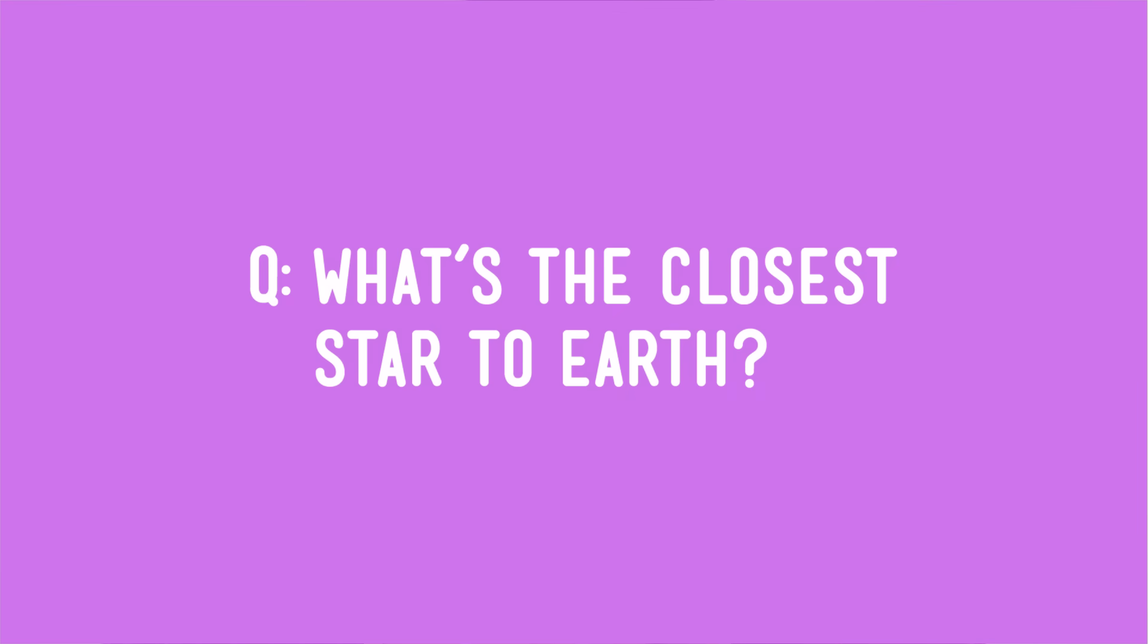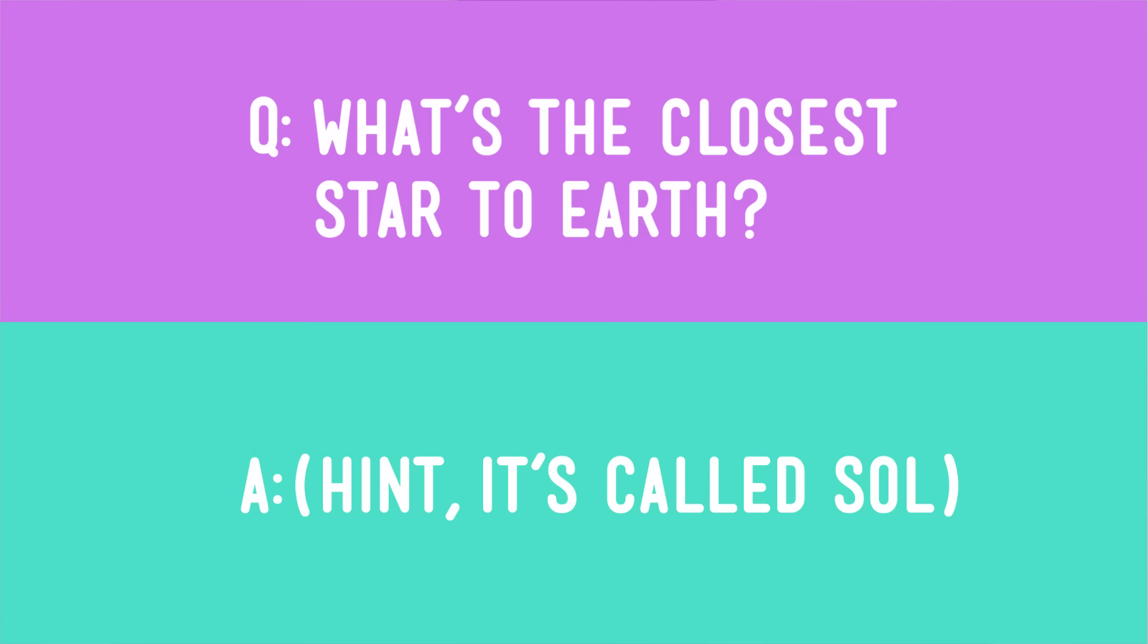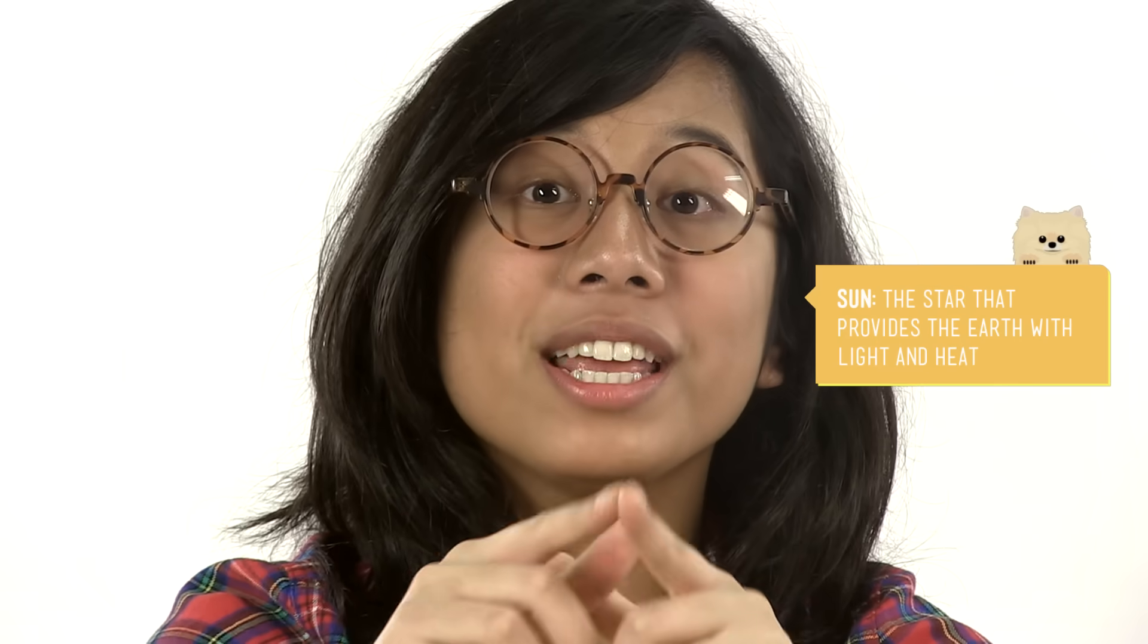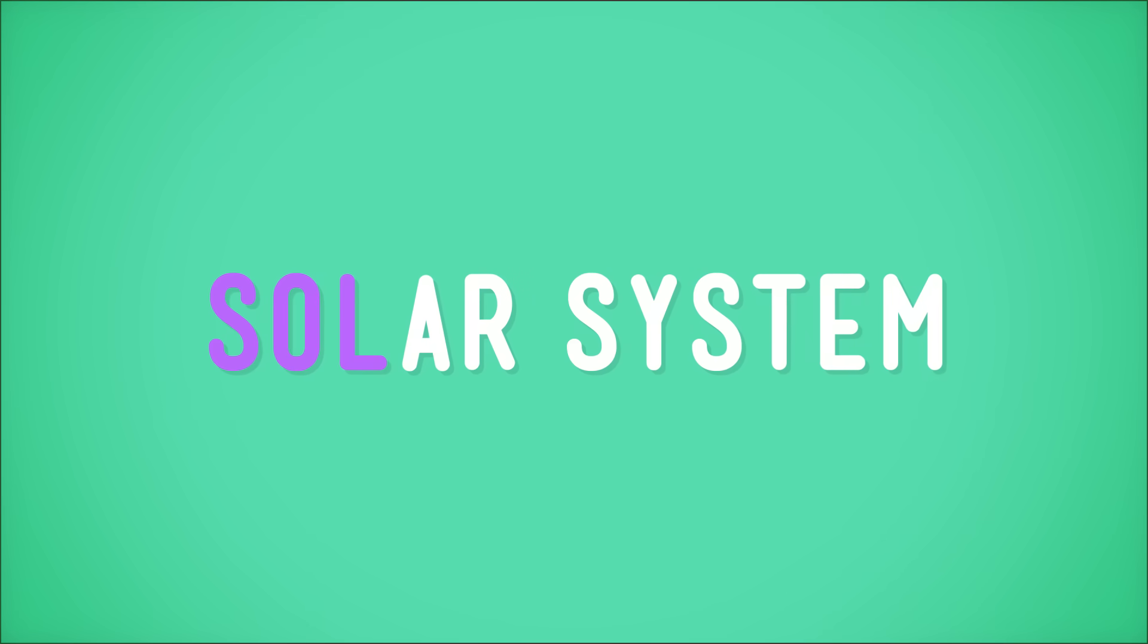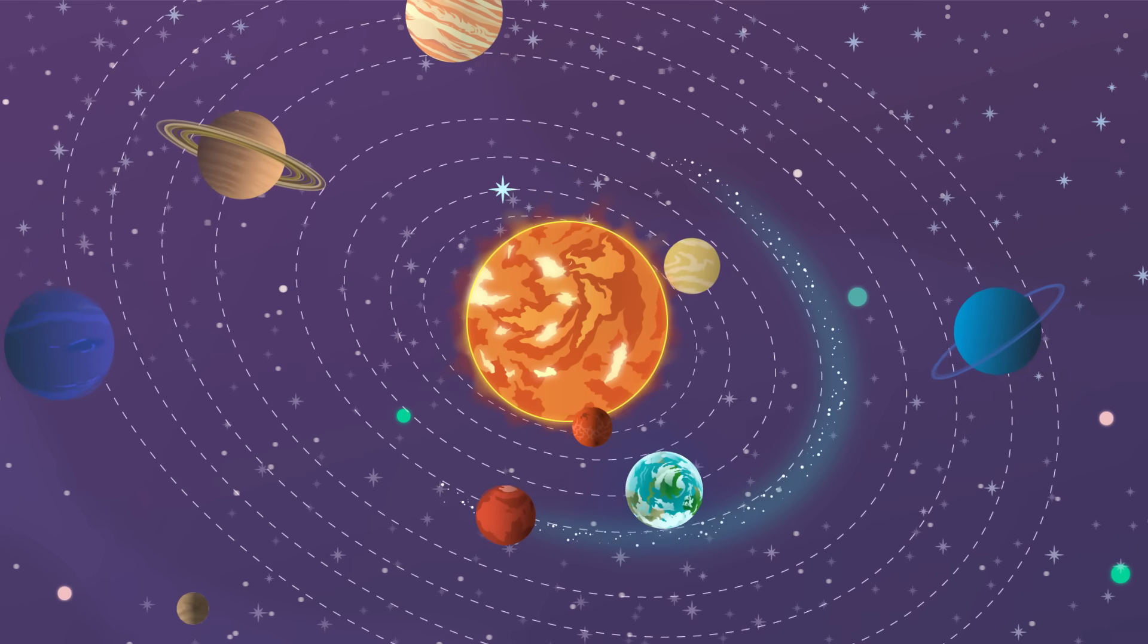Pop quiz: what's the closest star to Earth? It's called Sol. Never heard of it? Sure you have. Sol is the Sun. Ancient Romans who once worshiped the Sun called it Sol, and it's become the official scientific name for the Sun. It's where the term solar system comes from.